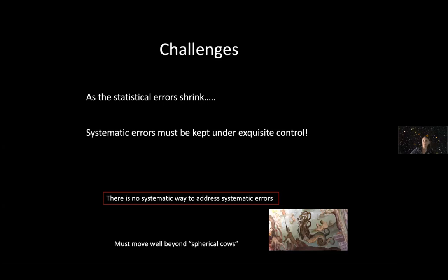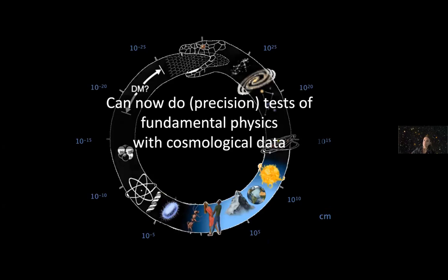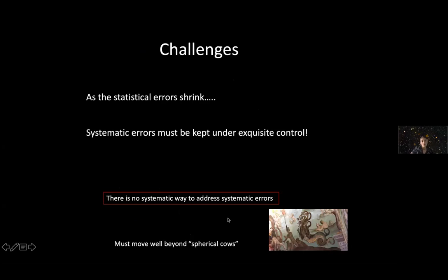Boring is good. We can do that because we have a standard model that provides such a good description of all the data. Of course, there are challenges. As the statistical error shrinks, the systematic error must be kept under exquisite control. We must move well beyond the modeling of spherical cows and really get into the nitty-gritty detail to ensure robustness of big claims.